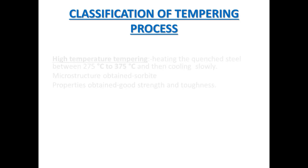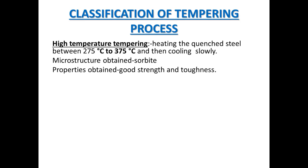Now let us discuss the classification of the tempering process. The tempering process is classified into high temperature tempering, medium temperature tempering, and low temperature tempering. In high temperature tempering, quenched steel is heated between 275 degrees Celsius to 375 degrees Celsius and held at this temperature for some time, then cooled slowly. By doing this, the microstructure changes to sorbite, which has good strength, toughness and ductility.